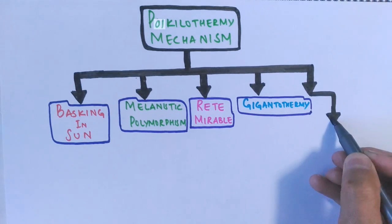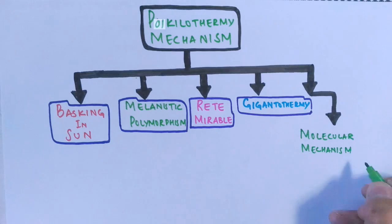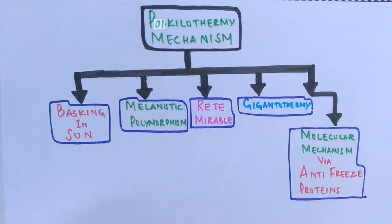And finally, we see there is a molecular approach towards poikilothermy also, which includes anti-freeze proteins. These anti-freeze proteins are protein-bound ice crystals that accumulate inside the bodies of animals and resist freezing, thereby regulating the temperature in some animals also. And this type of thermoregulation is mostly found in some fishes.